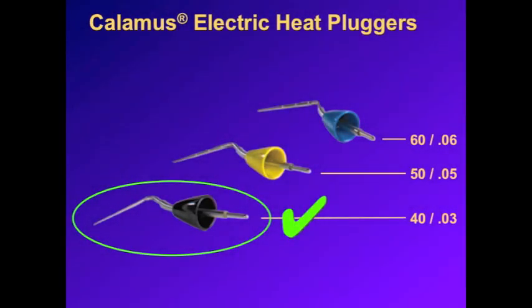There are primarily three sizes of Calamus heat pluggers: a 40-03, a 50-05, and a 60-06.